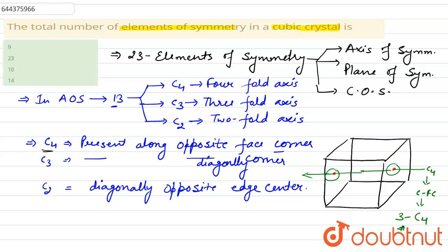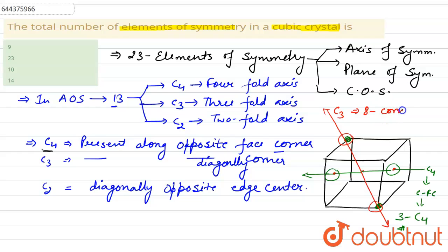Now let's see C3, which is present along diagonally opposite corners. This is a corner and the diagonally opposite corner is this one. This axis passes through the body center — this is the C3 axis. There are eight corners, and along two corners there is one axis, so eight corners means there are four C3 axes.